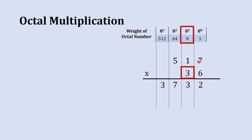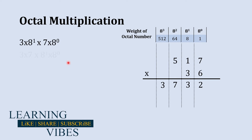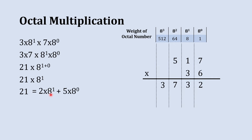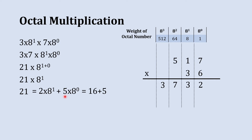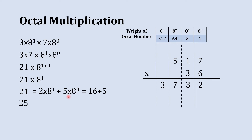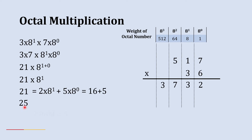When this 3, which has a weight of 8 raise to 1, gets multiplied with 7, which has a weight of 8 raise to 0, the result is 21 and the result of their weightage is 8 raise to 1. This 21 is decimal, so we convert it to octal: 2 into 8 is 16 and 5 into 1 is 5, so 16 plus 5 gives us 21, making 25 the octal equivalent to decimal 21. From this, 2 will be carry forwarded and 5 will be the result.